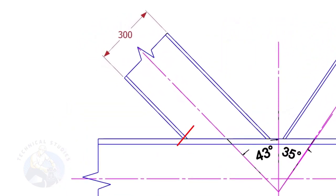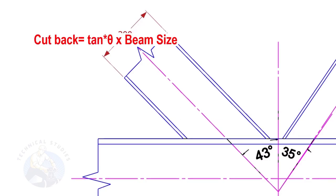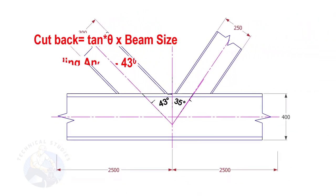Let us calculate the cutback of this beam. The formula to calculate the cutback is tan degree multiplied by the size of the beam. If the including angle is 43 degree and the size of the beam is 300, the cutback is tan 43 into 300.